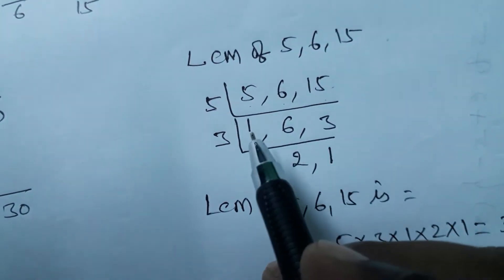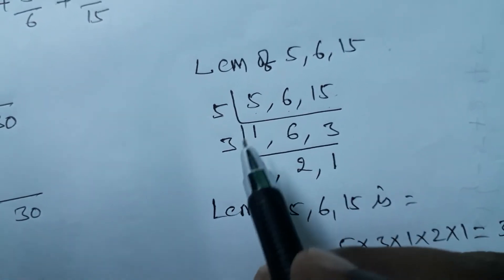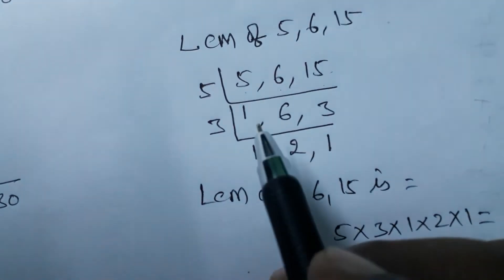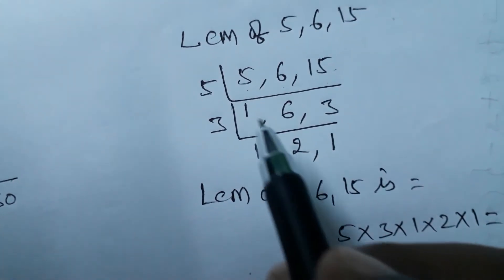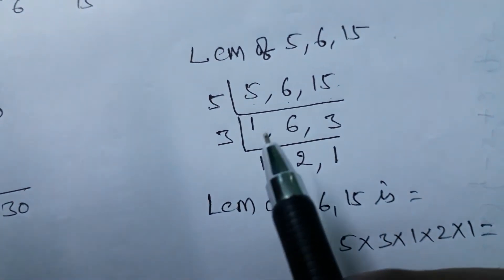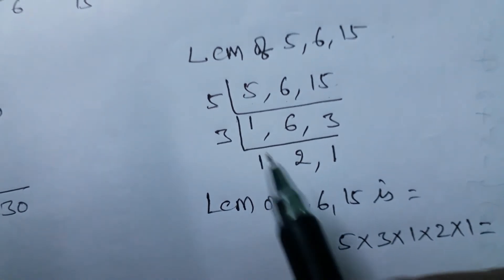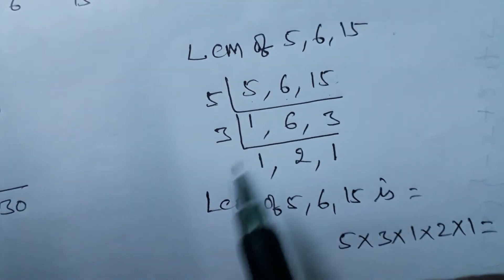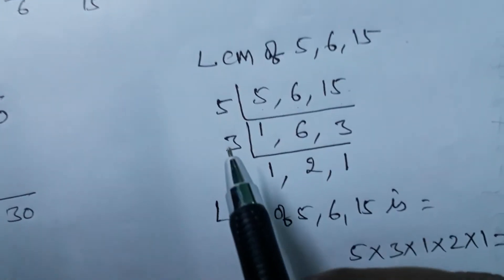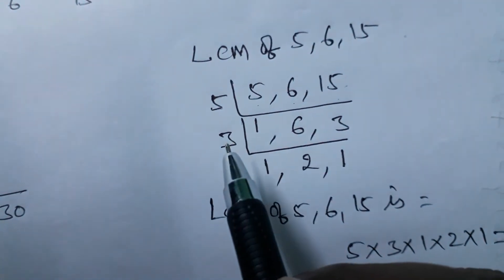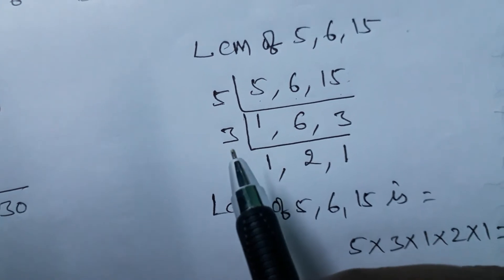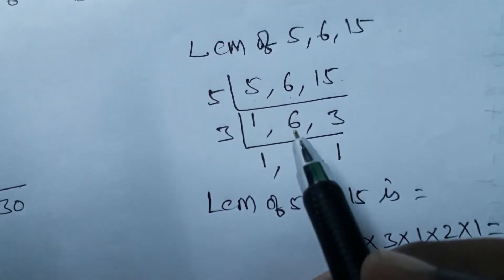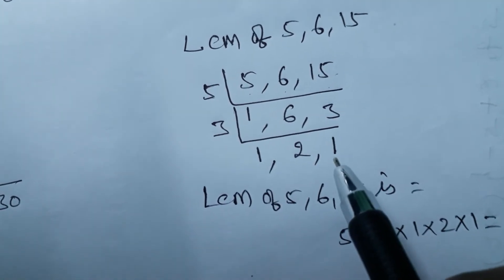From the new numbers 1, 6, 3 — no single number divides all three. But at least two are possible: 6 and 3 are both divisible by 3. So take 3 as the next divisor. 1 is not divisible by 3, write it as is. 6 divided by 3 is 2. 3 divided by 3 is 1. New numbers are now 1, 2, 1.